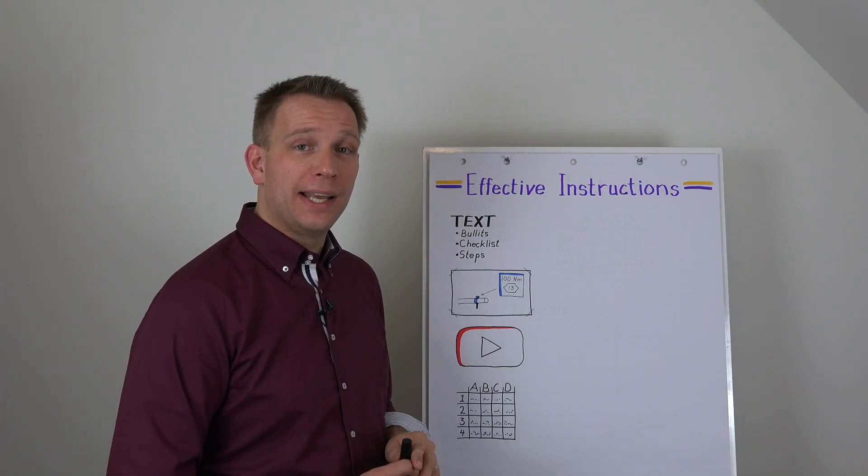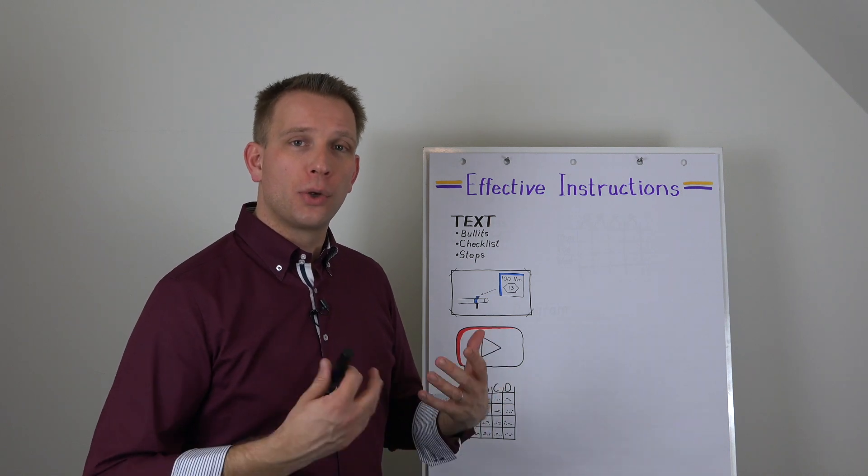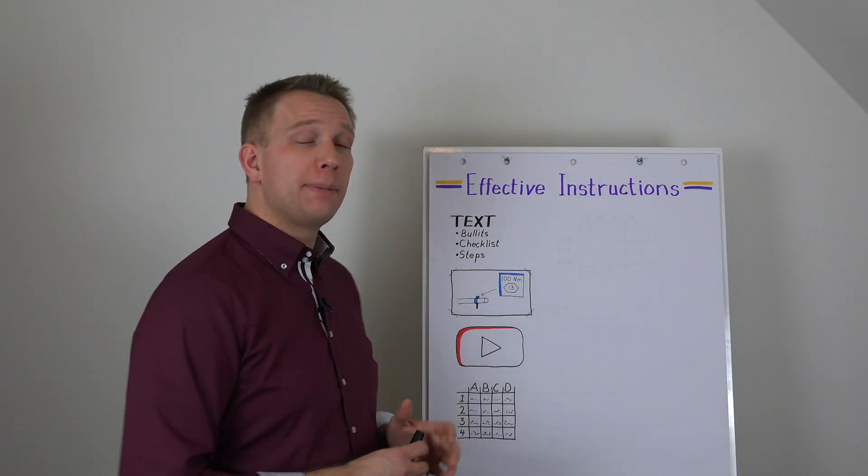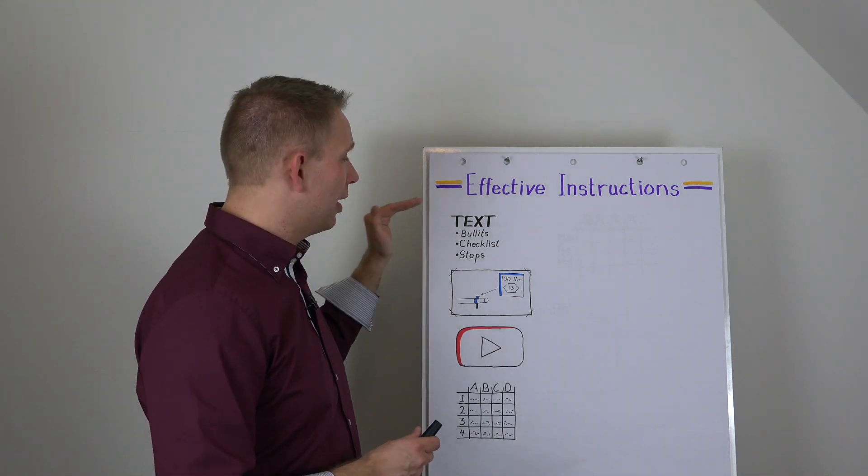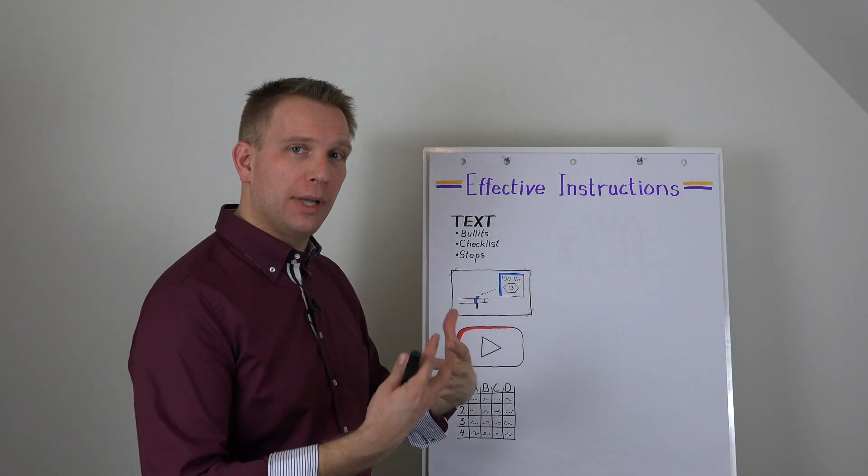Immediately, the first thing is that work instructions will, even if they are very visual, be largely based on text still. And text is an important part. We can also have bullets, checklists to have the steps in there.